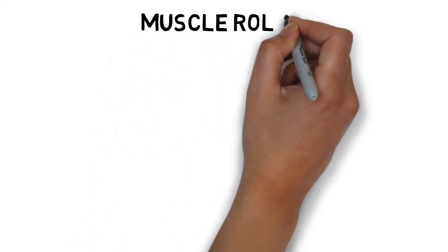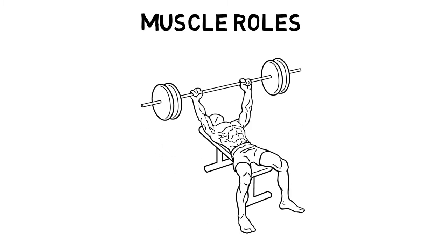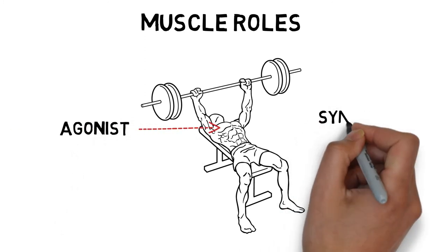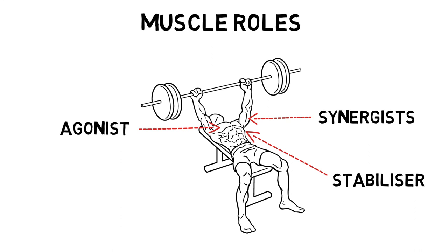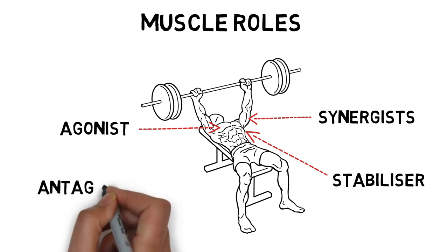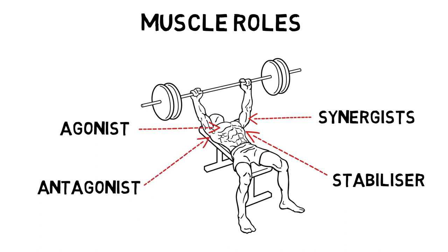During any human movement, different muscles will take on different roles. If we take a look at a barbell incline press for example: the pectoralis major is the agonist, which means it is the prime mover of the action. The anterior deltoid and triceps are the synergists — they don't do as much work as the prime mover but are still very important. The rotator cuff is an example of a stabiliser, working hard to stabilise the body whilst the prime mover and synergists do the work. And finally, the posterior deltoid is the antagonist, which means it opposes the prime mover — when any muscle contracts, the opposing muscle lengthens.